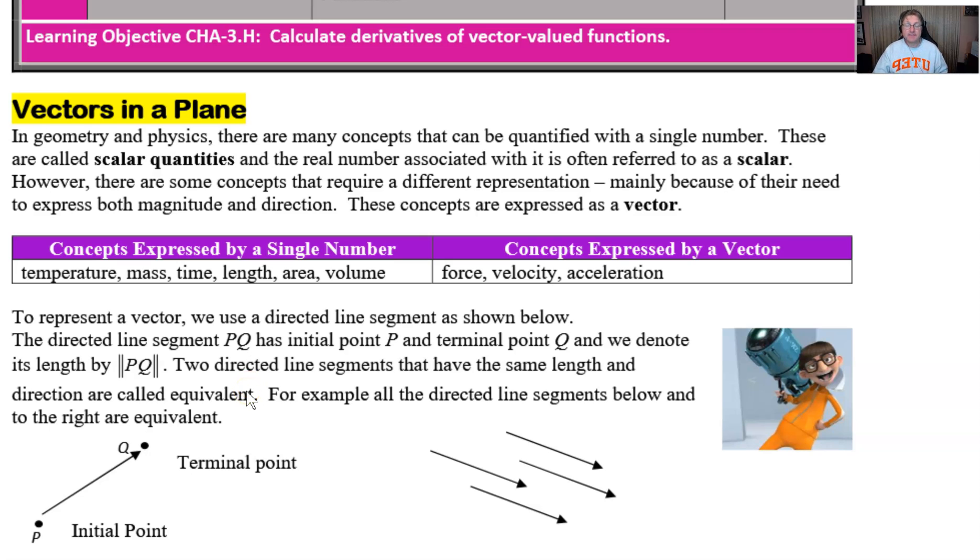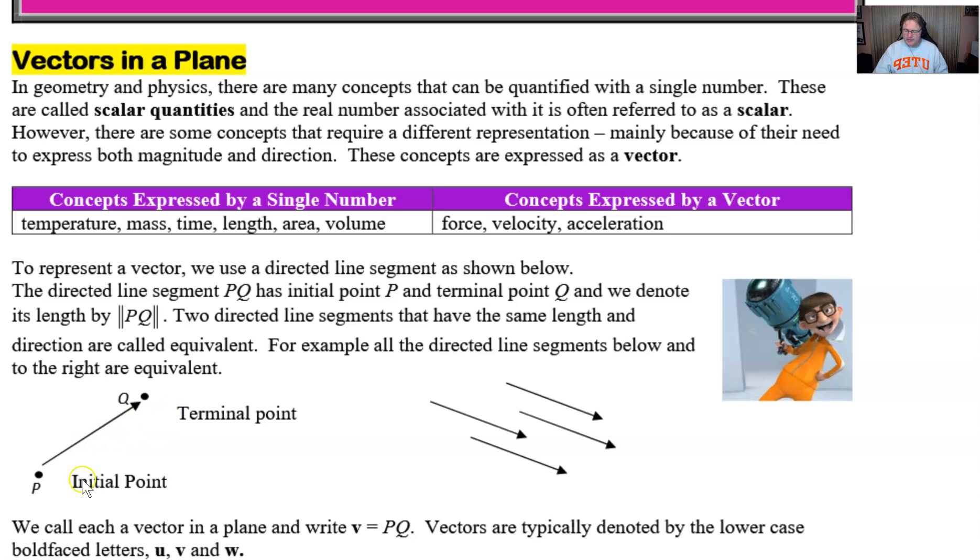Two directed line segments that have the same length and the same direction are going to be called equivalent. And all of the directed line segments below are technically equivalent to the original. Even though these vectors here are a little bit different looking, I can guarantee to you that they are the same length as PQ. They have the same magnitude, but it's very clear that these four do not have the same direction as PQ, so they're not equivalent technically. But these four vectors in and of themselves in that family all are equivalent, because all four have the same length and all four have the same direction.